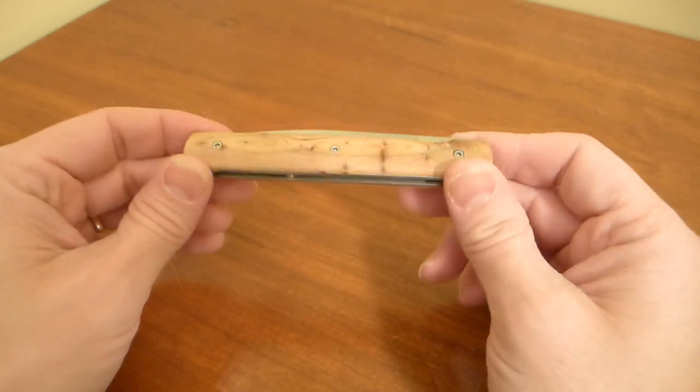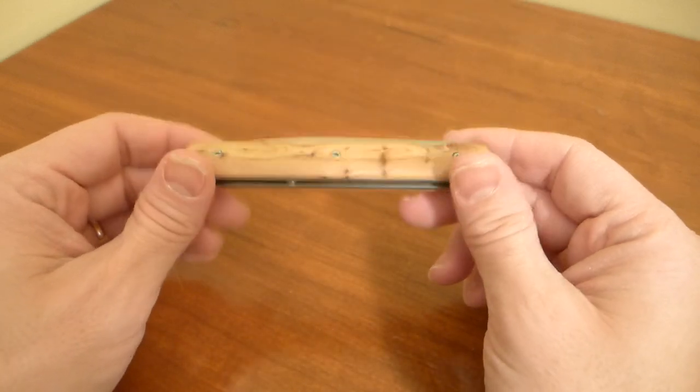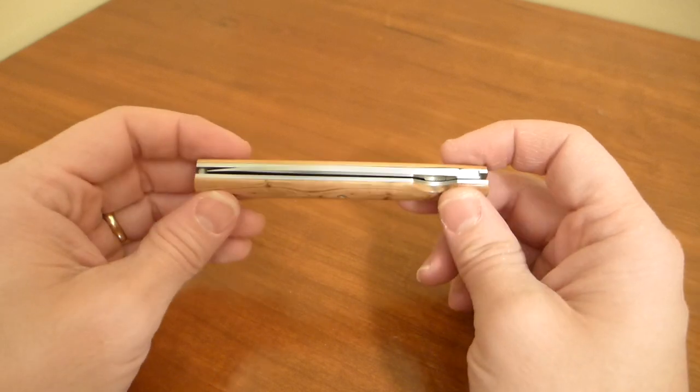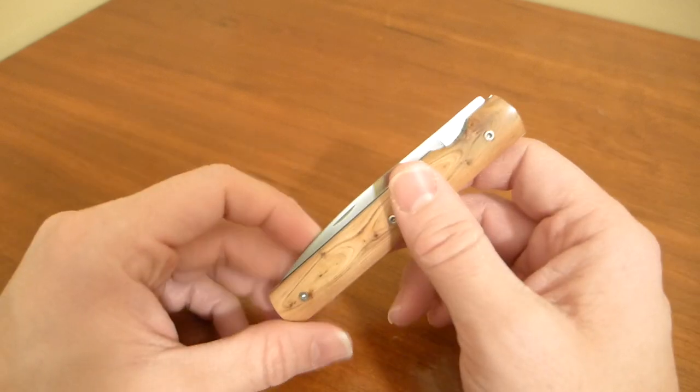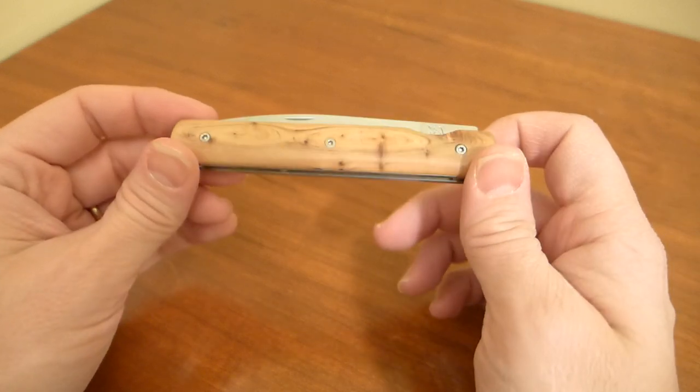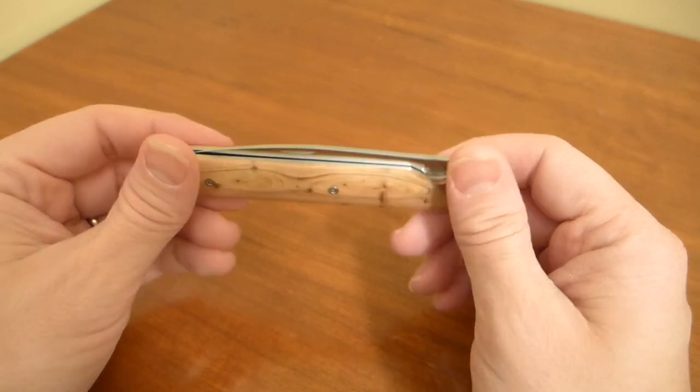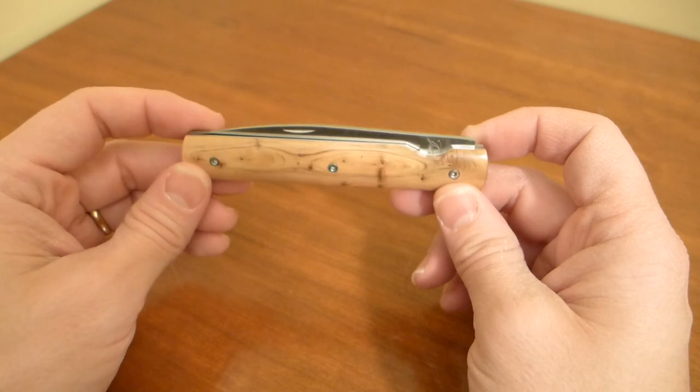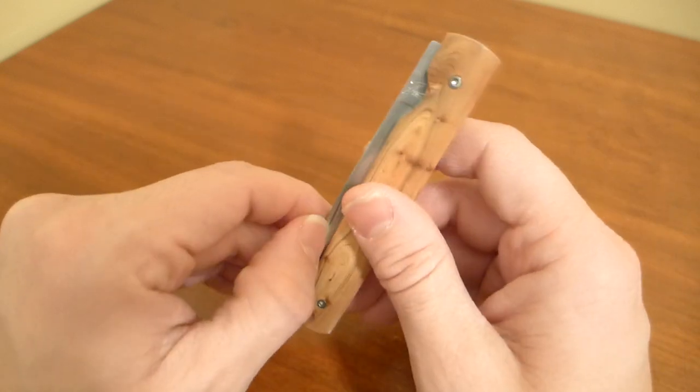So when you get a chance, go check out some of their knives. They make a couple of different designs. They make one that's kind of like a modern folder, but if you're going to buy a knife like this, why would you buy a modern folder from Percival? Go check out their knives. They're pretty interesting.